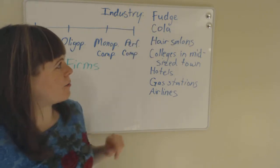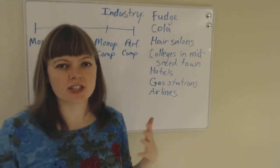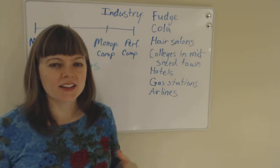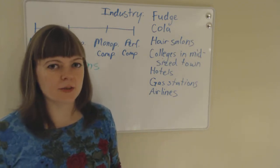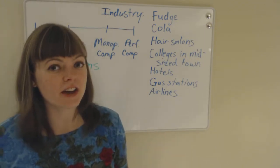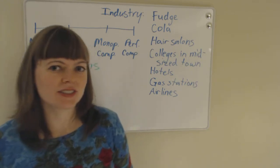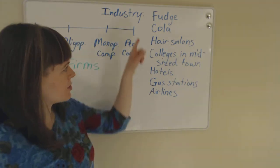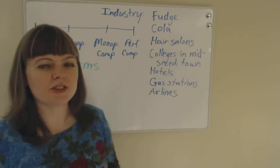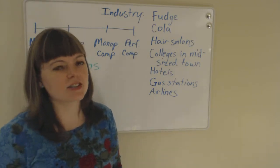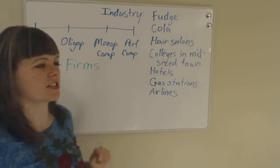So fudge, I think there's differences in fudge shops. Some fudge shops have lots of different flavors that they offer. Some fudge shops have better quality fudge. Some have a special secret recipe. So there's product differentiation for fudge shops, but there's lots of different places you can buy fudge. So that's going to fall into the monopolistic competition category.